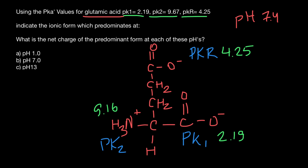These pKa numbers indicate the pH threshold for each group. If the solution pH is below the pKa, the group is protonated. If pH is above the pKa, the group is deprotonated. For the amino group (pK2), below 9.16 gives a positive charge (NH3+); above 9.16 it deprotonates to NH2 and loses the positive charge.